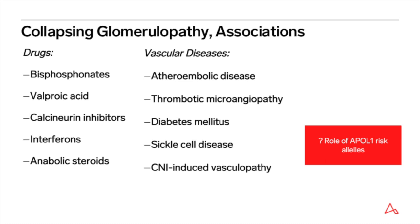The connection between ischemia and CG is also supported by studies documenting collapsing lesions in the setting of cholesterol atheroembolism, thrombotic microangiopathy, diabetic vasculopathy, and renal infarction. An important point needs to be made about the potential role of APOL1 risk alleles in cases of collapsing glomerulopathy and its aforementioned associations. There is growing evidence that secondary modifiers, or so-called second hits, and specific epistatic interactions may be required for the clinical manifestation of APOL1-related disease. Data suggests that the second hit scenario is highly likely in cases of CG arising in the setting of HIV infection, parvovirus B19, SLE, and primary membranous glomerulopathy in African Americans.